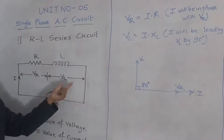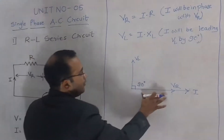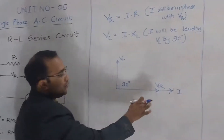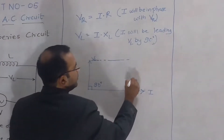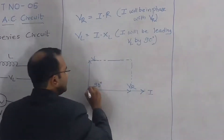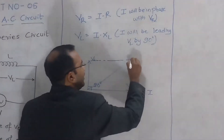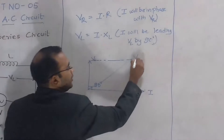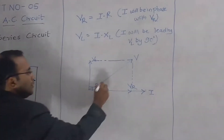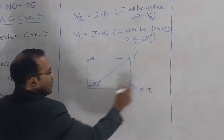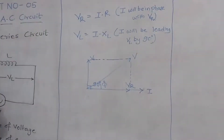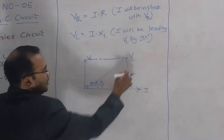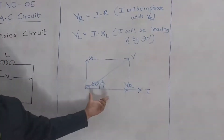The resultant voltage vector V is nothing but the phasor addition of VR and VL. So we will do the vector addition for VR and VL by drawing the parallelogram. The resultant vector V is the applied voltage V. The angle between this voltage and current is phi, which is called the power factor angle. This is your phasor diagram.